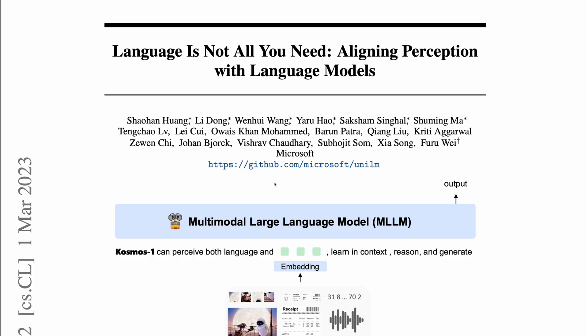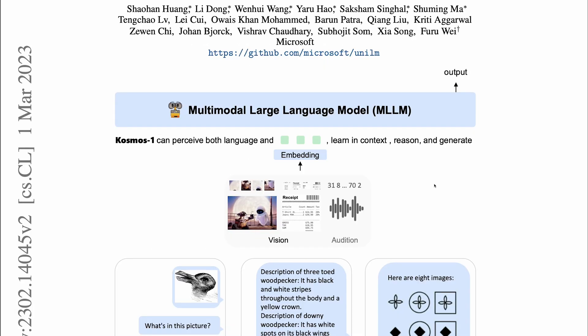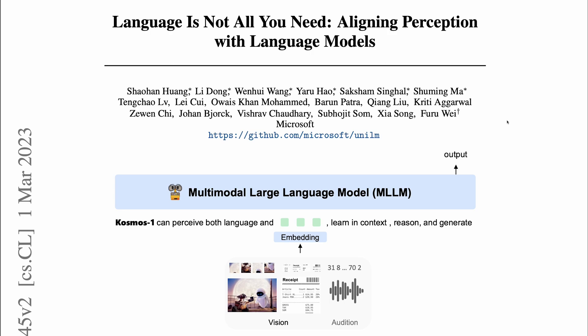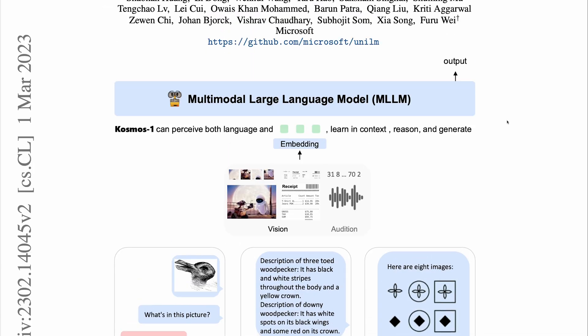As the observant among you will have noticed, Cosmos 2 builds on previous work, Cosmos 1, also from Microsoft, way back in those halcyon days of spring 2023, before the dawn of GPT-4. Cosmos 1 was similar in spirit to Flamingo. It could take in interleaved text and images and output text. This work wasn't afraid of tearing up the rulebook.